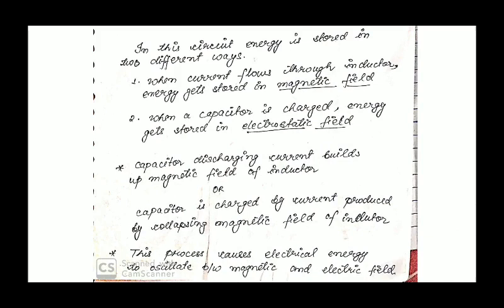There are two energy-storing devices: one is the inductor and the other is the capacitor. The inductor stores energy in the form of a magnetic field, that is energy equals half L i-squared, and the capacitor stores energy in the form of an electrostatic field, that is energy equals half C v-squared. When the capacitor discharges, the inductor builds up its magnetic field, and when the magnetic field of the inductor collapses, the capacitor gets charged. So oscillation occurs between the electrostatic field and the magnetic field, and this process continues.